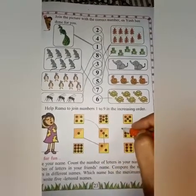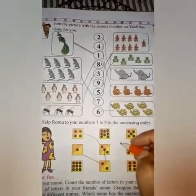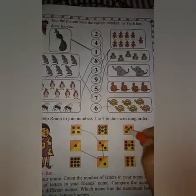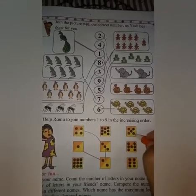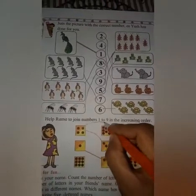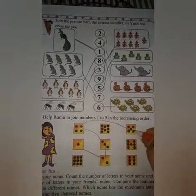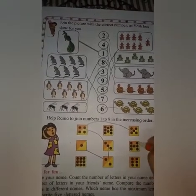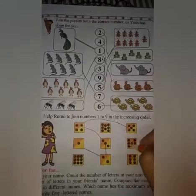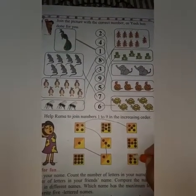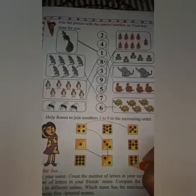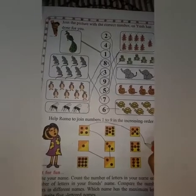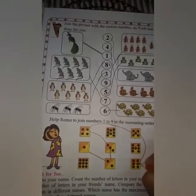After 4, which number comes? Yes, number 5. So let's join here to number 5 — dots: 1, 2, 3, 4, 5. Yes. After 5, which number comes? Number 6. Let's count this box: 1, 2, 3, 4, 5, 6. Yes, here — number 6 dots. So after 5, we join to number 6. After 6, which number comes? 7. We already counted 7 dots in this box. So we join to 7.